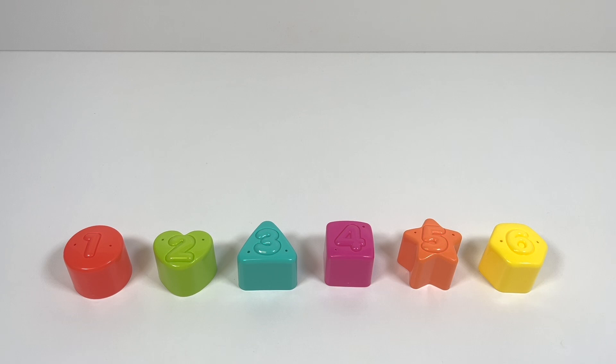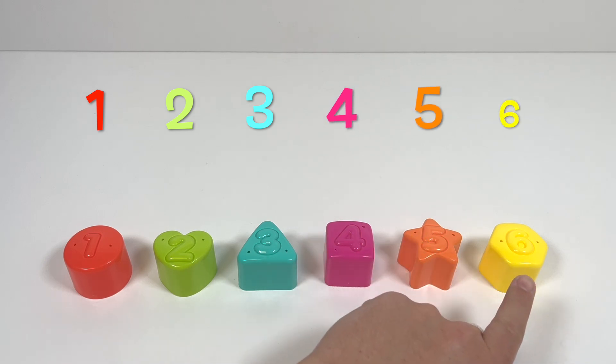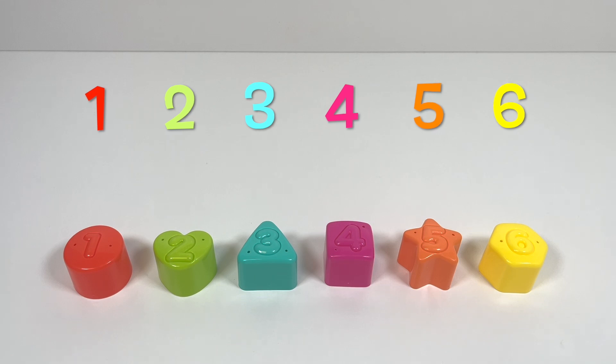There are 6 different shapes and each one has a number on it. Let's count them. 1, 2, 3, 4, 5, and 6. Let's look at each number.